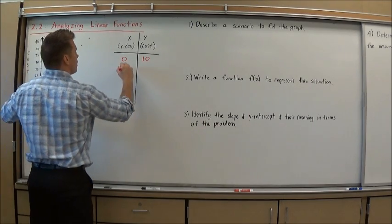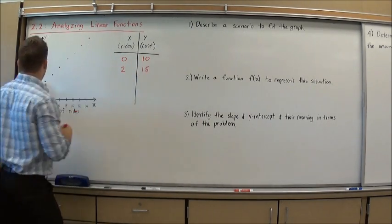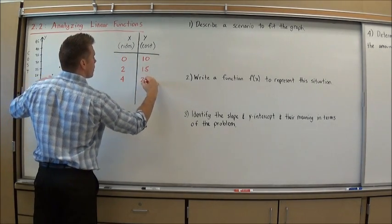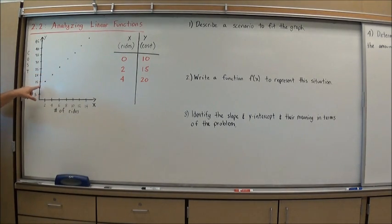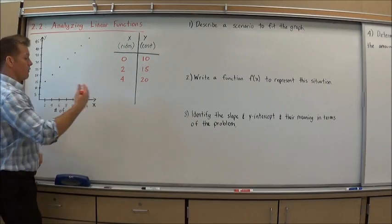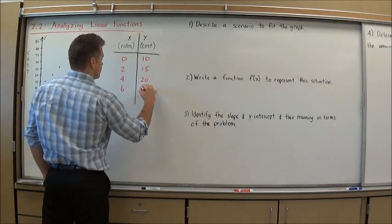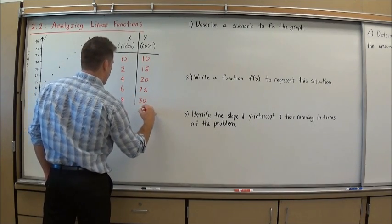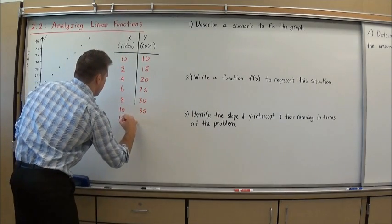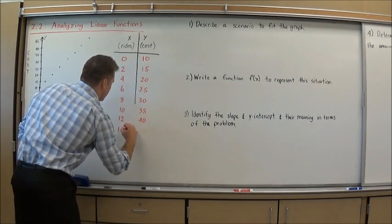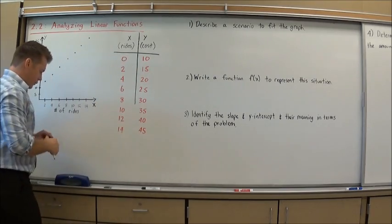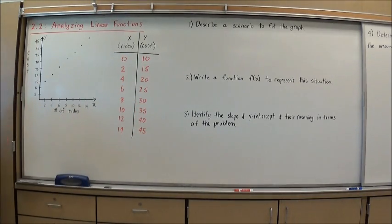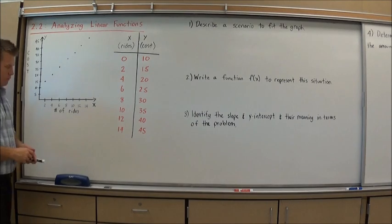For 2 rides, I now pay $15. For 4 rides, they have me paying $20. I can see it looks like a fairly constant rate up. From here, I'm going to go ahead and enter the points: 6 and 25, 8 and 30, 10 and 35, 12 and 40, 14 and 45. All I've done here is take the data from the graph and created a table of values.